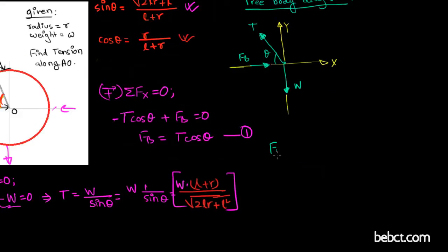Now let's solve for F_B. F_B is equal to the product of T and cos theta. Cos theta is equal to R divided by L plus R, and T is equal to this expression. Let's copy that over there.